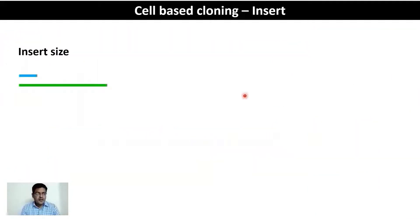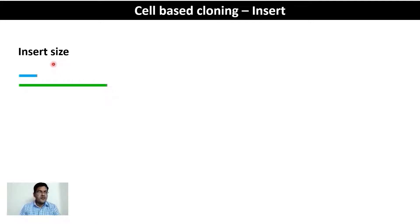When designing a cell-based cloning experiment, the driving force is the insert. The insert is central to defining which vector and which type of host cell will be used because the insert is highly variable. The first variation is insert size — the insert could be as small as 100 base pairs or even smaller.